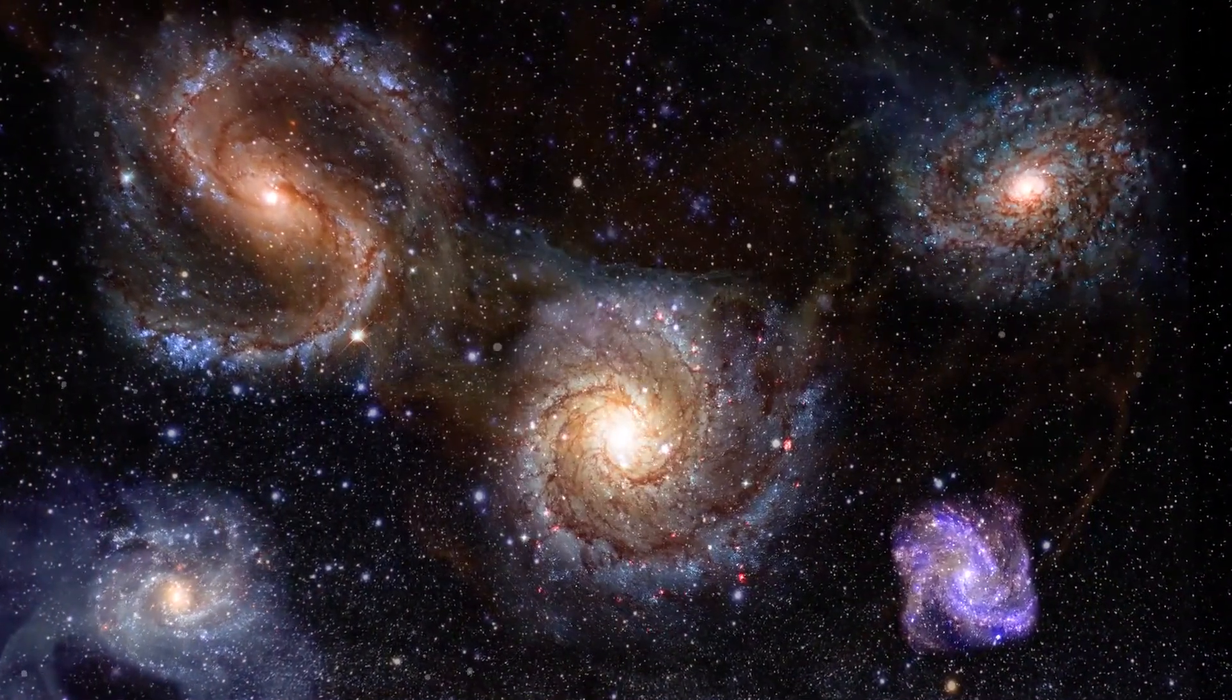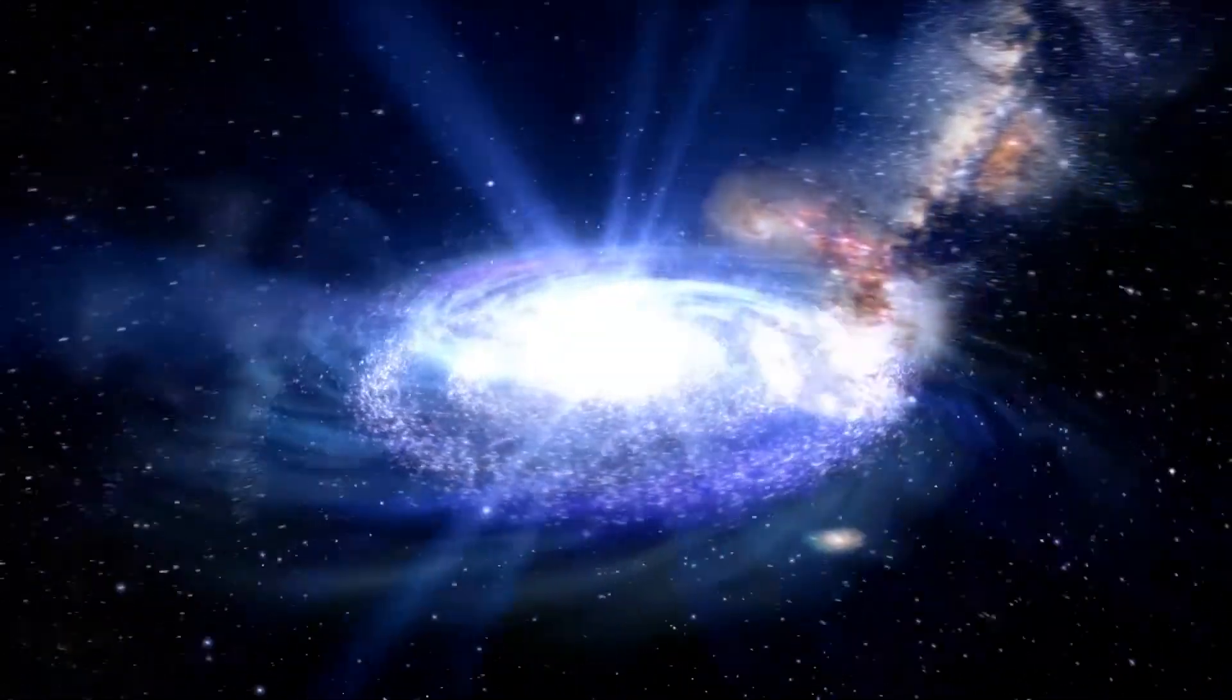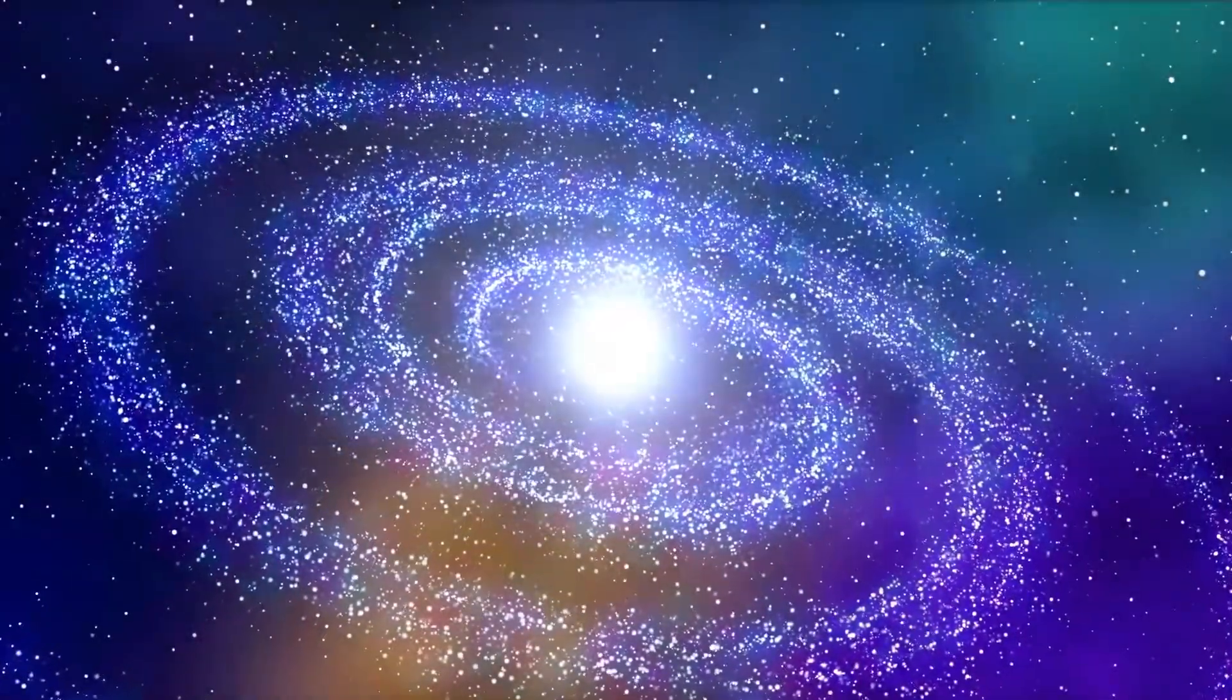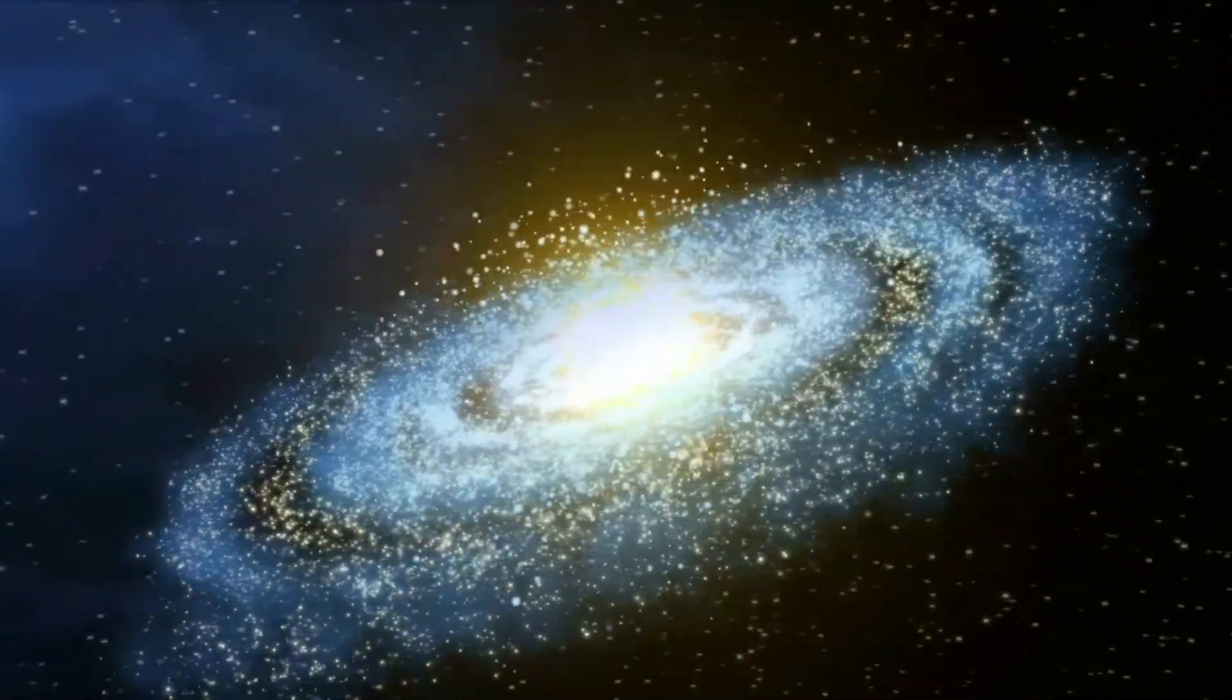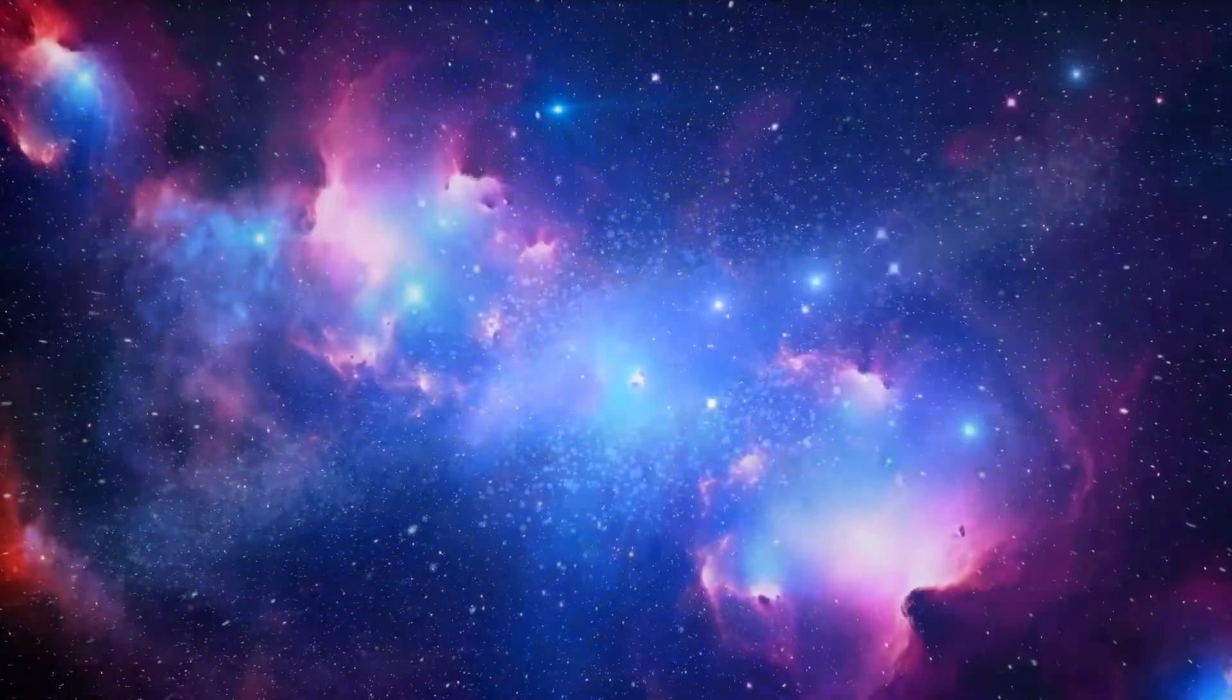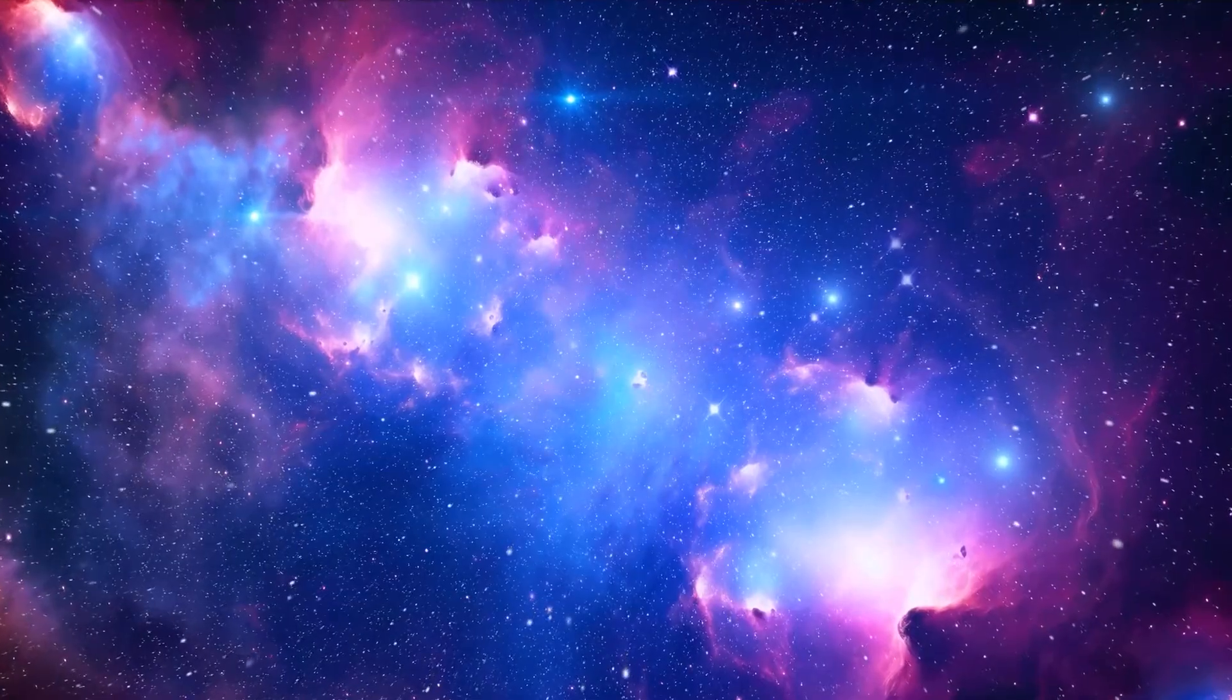Maisie's galaxy differs from most modern galaxies in that it appears to be actively producing new blue stars at the time we are watching it. It was photographed during a time in a galaxy's life cycle known as a starburst. This means that this greatly red-shifted galaxy is really much more blue than astronomers anticipated because its newborn stars are luminous and blue.